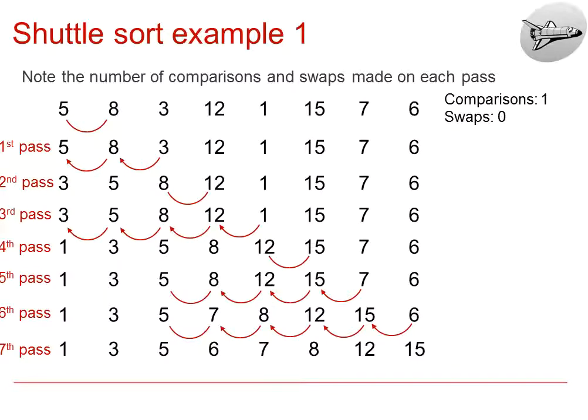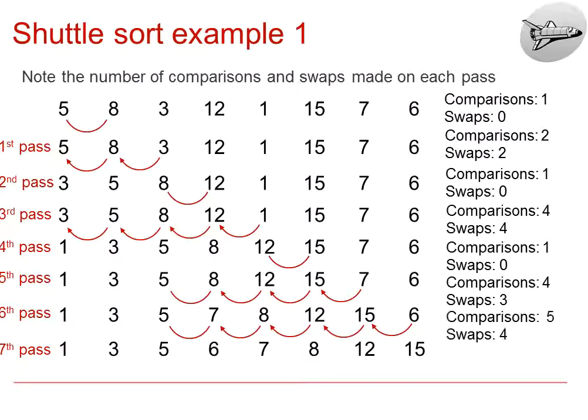If we want to look at the comparisons and swaps, we just have to count the number of arcs, or arcs with arrows, and as you can see, these do not follow any particular pattern, unlike the bubble sort.